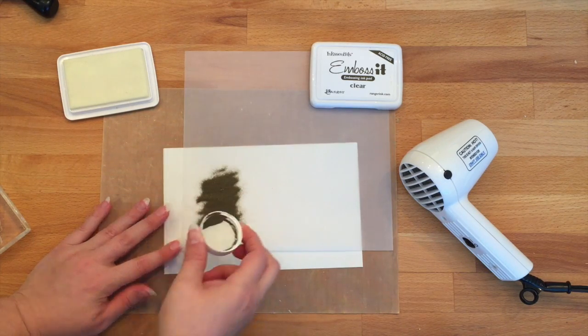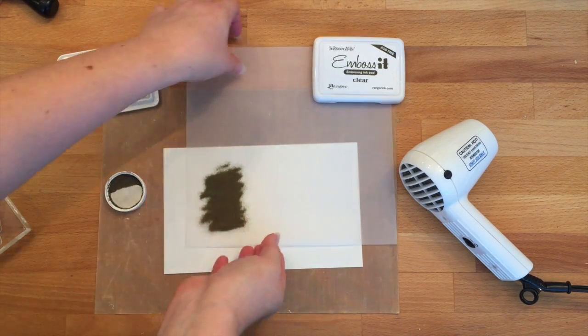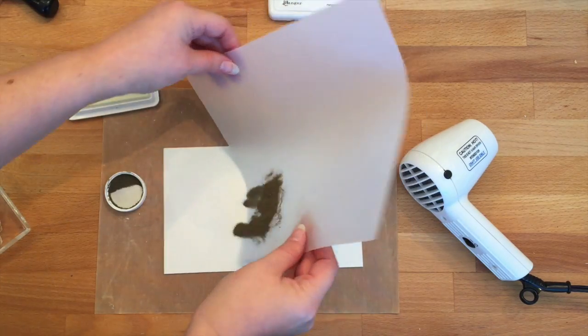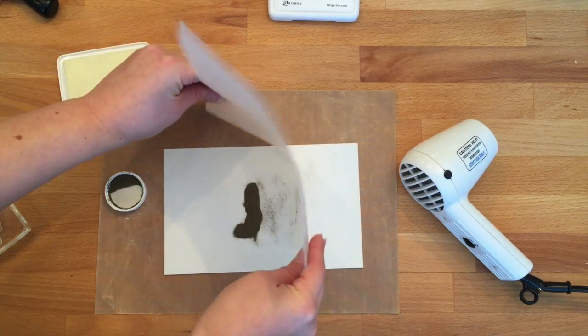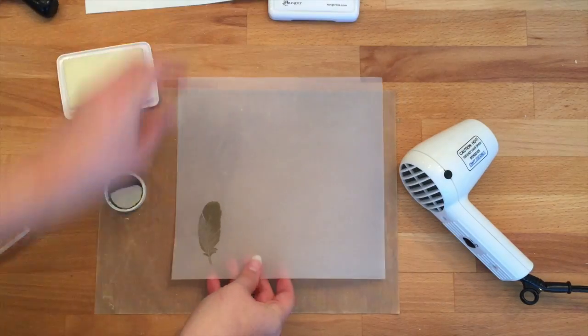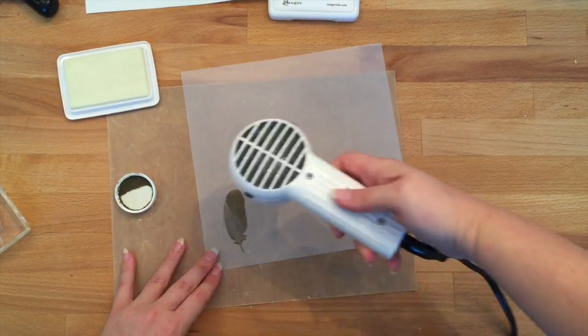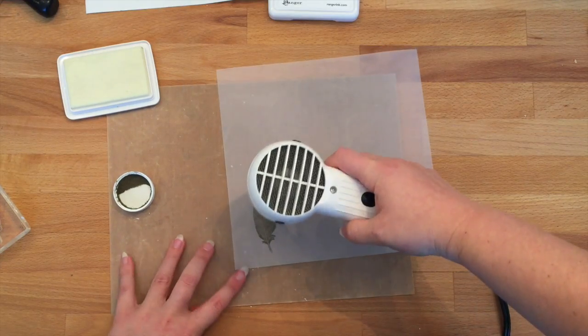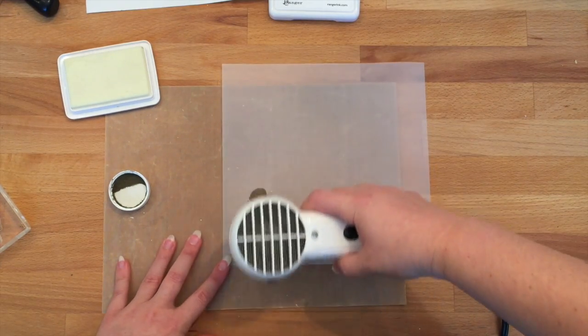After stamping, we're going to sprinkle the gold embossing powder over top of what we just stamped, then tap, tap, tap that vellum to remove any excess embossing powder. Then we can start our heat gun and emboss the embossing powder to get it melted for a nice finish.